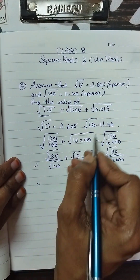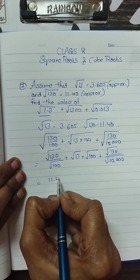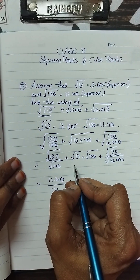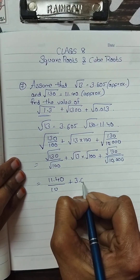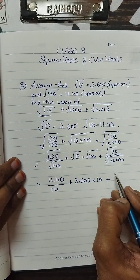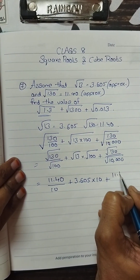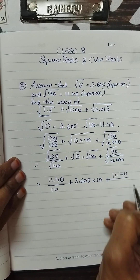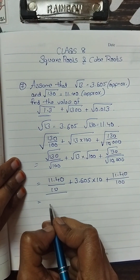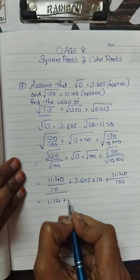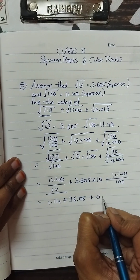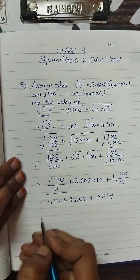That equals: √130 = 11.40 divided by √100 = 10, plus √13 = 3.605 multiplied by √100 = 10, plus √130 = 11.40 divided by √10000 = 100. This simplifies to 1.14 + 3.605 × 10 = 36.05 + 0.114.